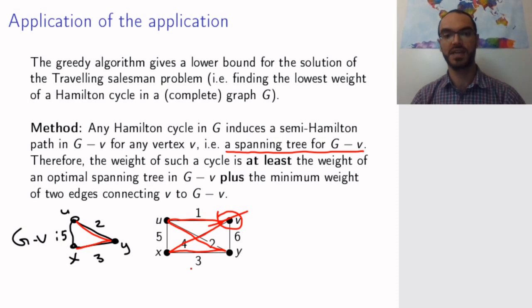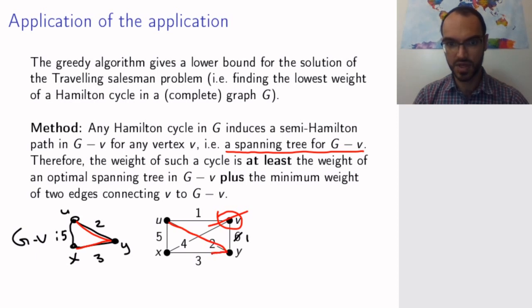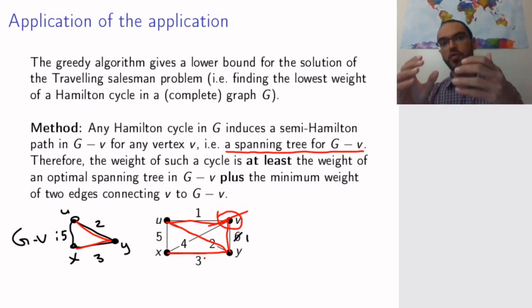But that is not guaranteed. For suppose the weights were different. Suppose that this weight was in fact 1, and not 6. Then what would have happened is I would still have the same spanning tree for G minus V. But then when I connect V to this using the cheapest edges possible, I get something that is not at all a Hamilton cycle. So I do not claim that this creates a Hamilton cycle, but it creates some graph whose total weight is smaller than or equal to the weight of the optimal Hamilton cycle, had I been able to create it.